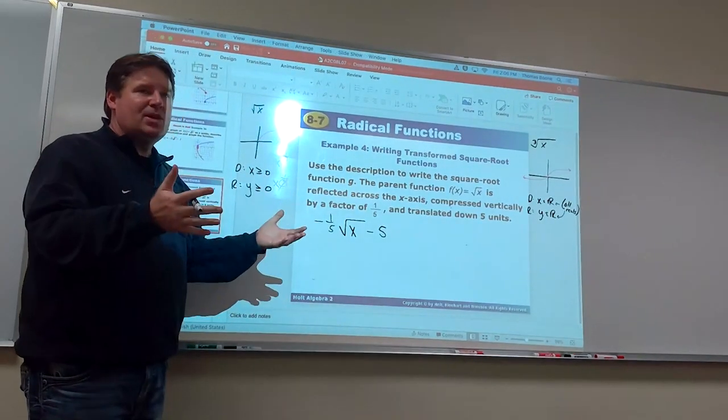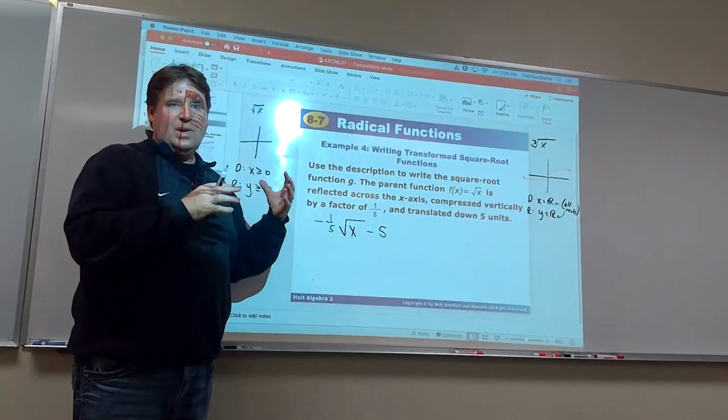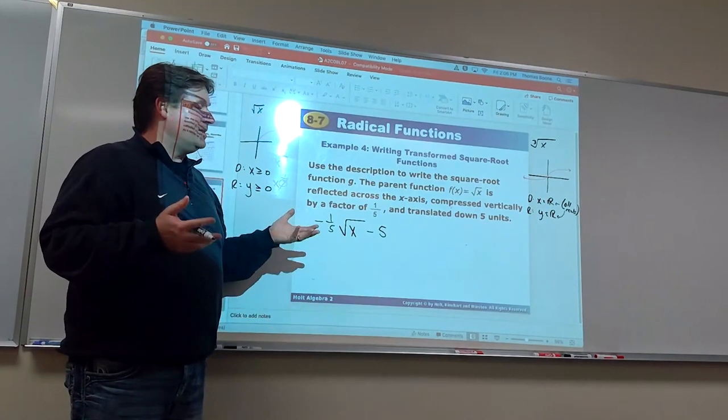So, if we give you the transformations, you should be able to convert the rule. If we give you the rule, you should be able to identify those transformations. That's 8-7.